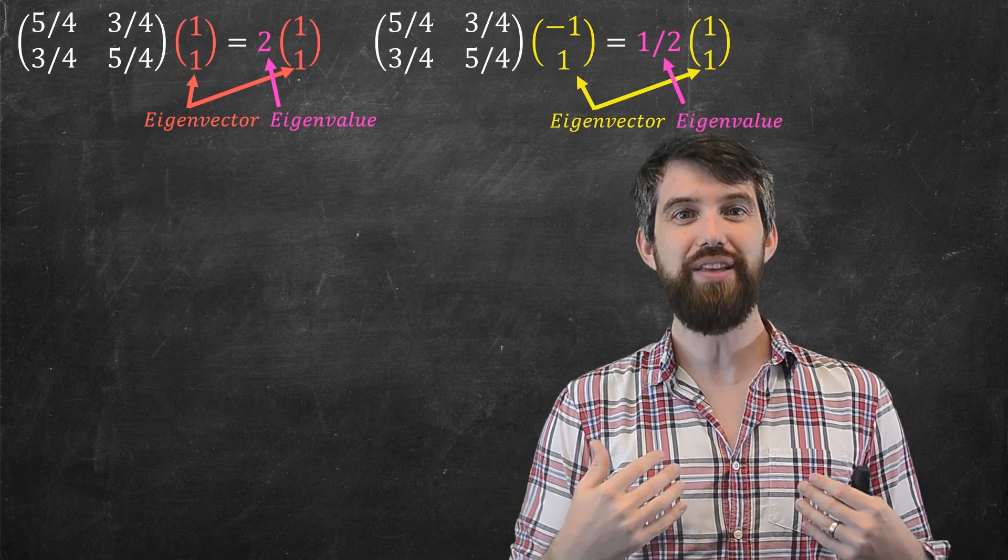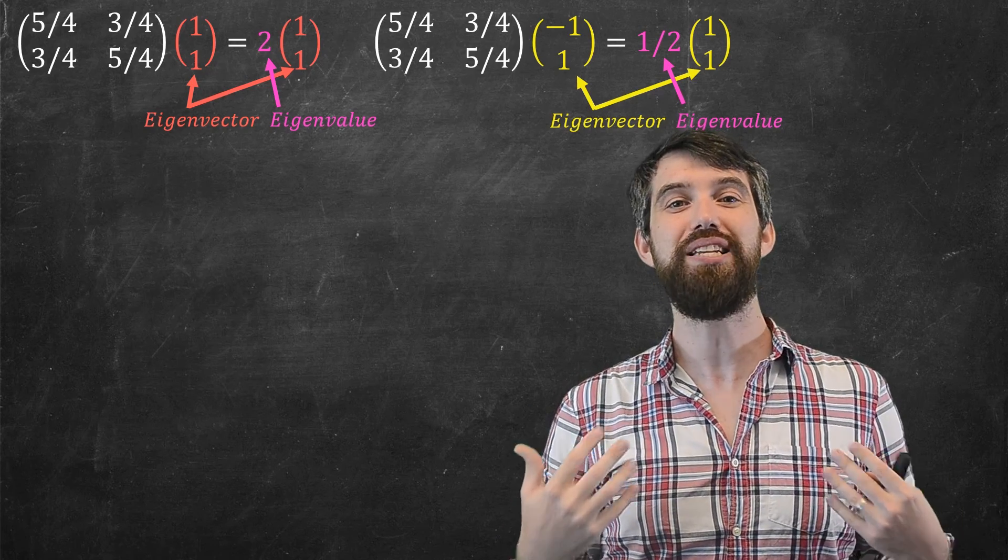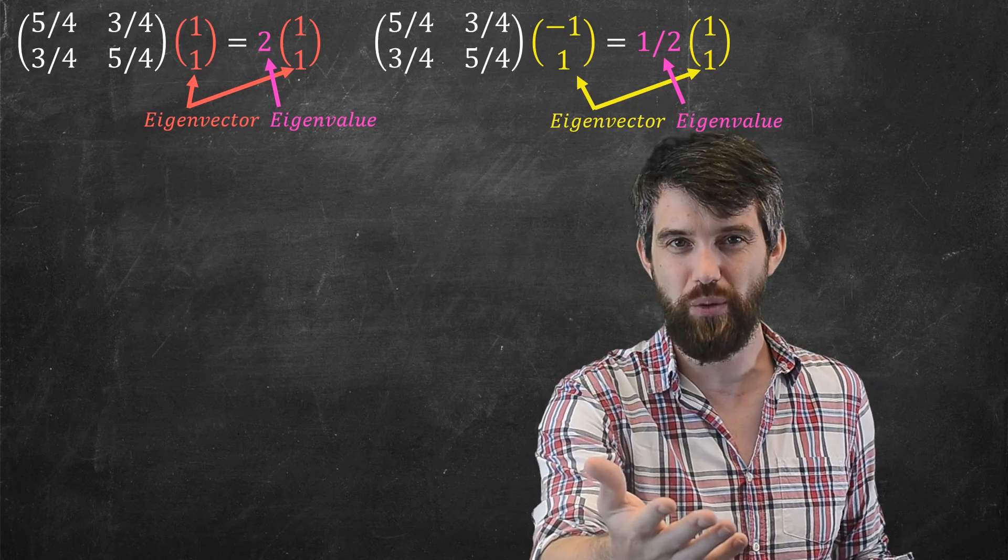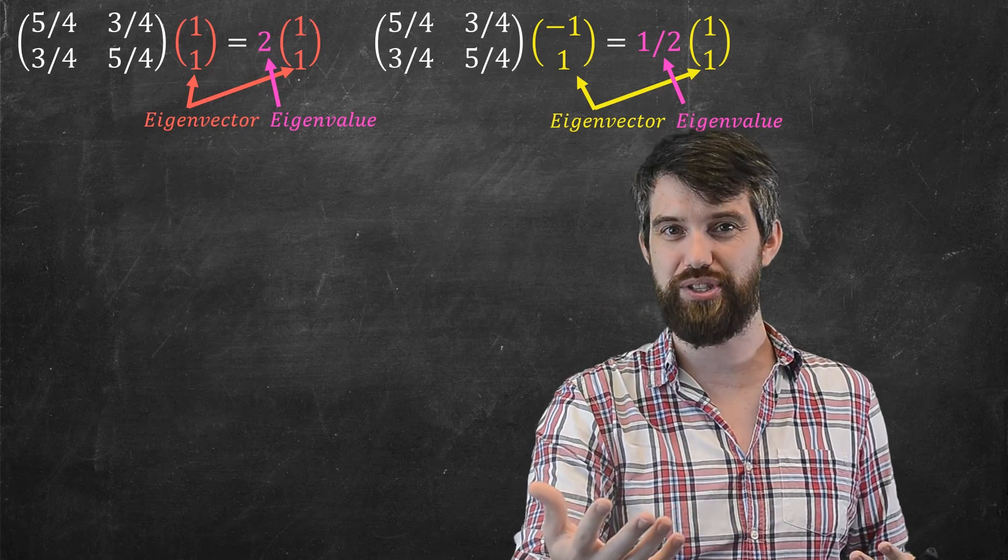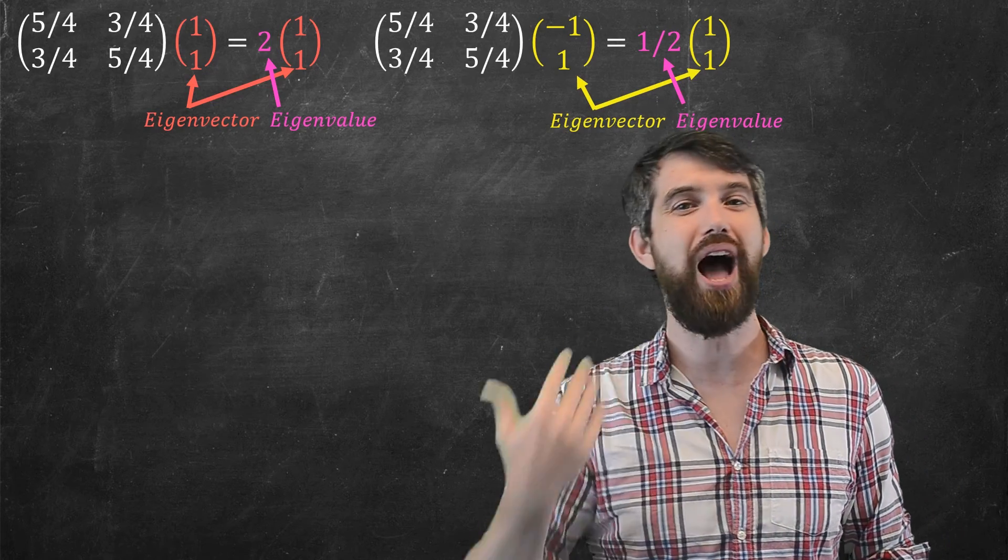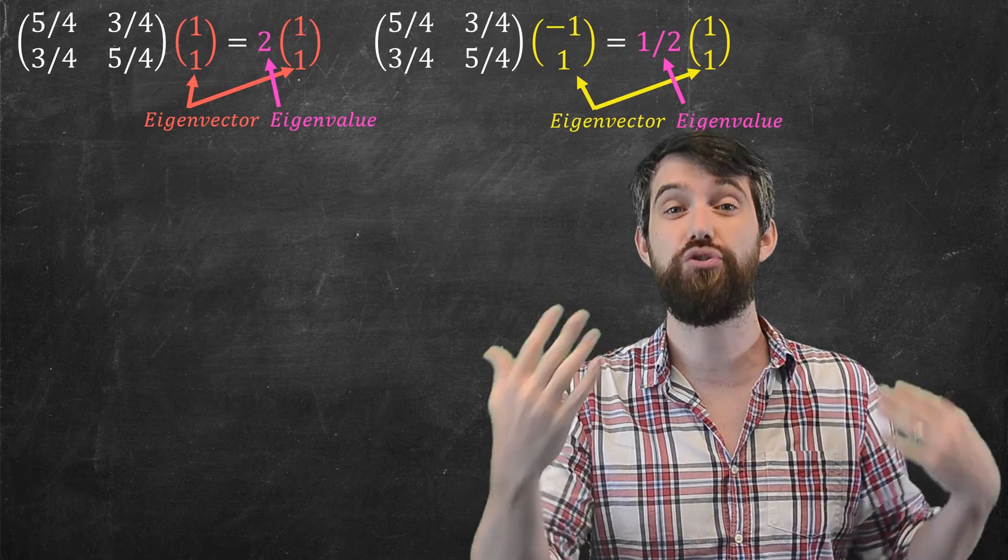But the key point is this. When I look at an eigenvector, this is the direction where the matrix applies in a very simple way. It's just a stretching factor, kind of like we had with diagonal matrices. For diagonal matrices, it was very simple. It was just stretching the standard basis vectors. For eigenvector-eigenvalue pairs, in those specific directions, the matrix just works by stretching as well.